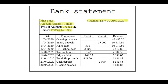The statement date tells us that he got the statement on 30 April. Now let's look at the headings. We have the date — that's when all the transactions took place. The transaction basically tells me what happened on that specific date.